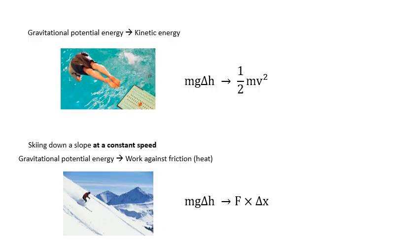If you ski down a slope at a constant speed, then you're not gaining kinetic energy, and it's just gravitational potential energy goes to work against friction. I'm going to talk a lot about that later in this video. So MgΔH goes to F times delta X.